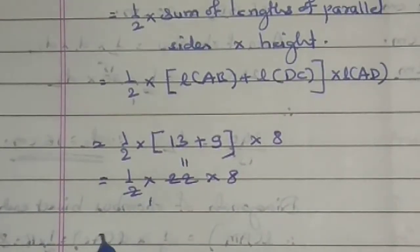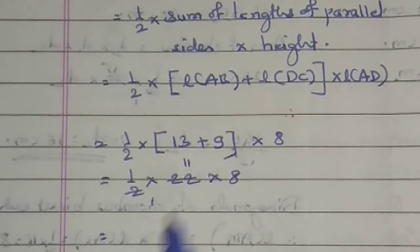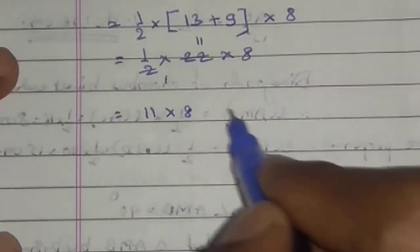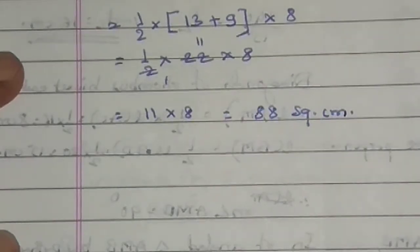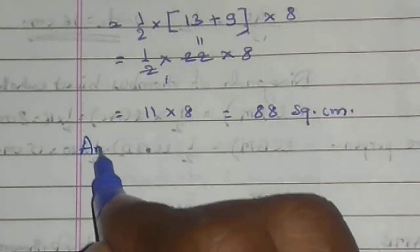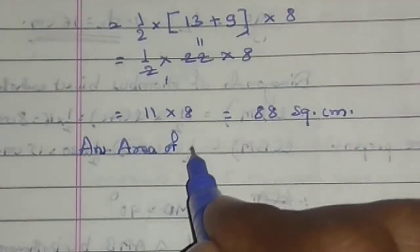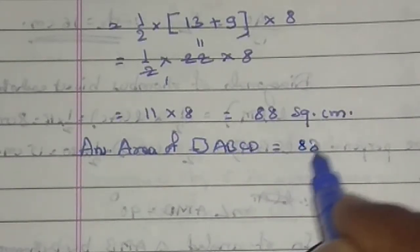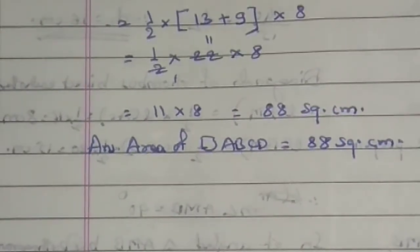Therefore, area equals one half times (13 plus 9) times 8, which is one half times 22 times 8. Dividing: 2 and 2 cancel, giving 11 times 8 equals 88 square centimeters. The final answer: area of quadrilateral ABCD equals 88 square centimeters.